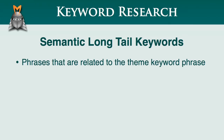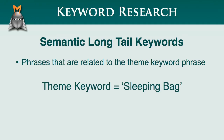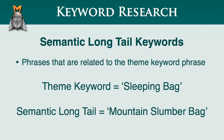Now, semantic long-tail keywords are phrases that do not contain the theme keyword phrase but are still semantically related. So, with the sleeping bag example, a semantic long-tail keyword might be "mountain slumber bag." In this example, the initial theme phrase, "sleeping bag," is not actually part of the long-tail keyword phrase, but Google still sees them as being related.